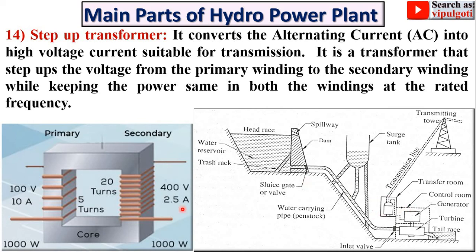At the power station, the step-up transformer is required to increase the voltage. Here you can see the voltage is increased from 100 V to 400 V, and so the current decreases from 10 A to 2.5 A, because power remains constant: 100 × 10 = 1000 W and 400 × 2.5 = 1000 W. It is a transformer that steps up the voltage from primary to secondary winding while keeping the power the same at the rated frequency.